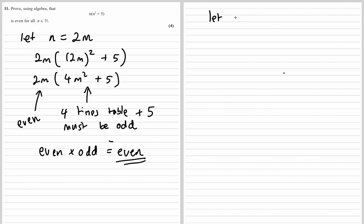How about if n is odd? Let n equal 2m plus 1. So an even number plus 1, that makes it odd. In this case we'll have 2m plus 1 times by 2m plus 1 squared plus 5. Leave 2m plus 1 here, that's our odd number.